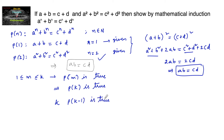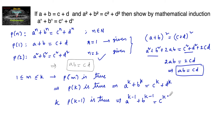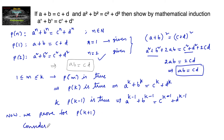P(k−1) is also true, since it is below k. So if P(k) is true: aᵏ + bᵏ = cᵏ + dᵏ, and P(k−1) is true: aᵏ⁻¹ + bᵏ⁻¹ = cᵏ⁻¹ + dᵏ⁻¹. We now need to prove P(k+1): aᵏ⁺¹ + bᵏ⁺¹ = cᵏ⁺¹ + dᵏ⁺¹.